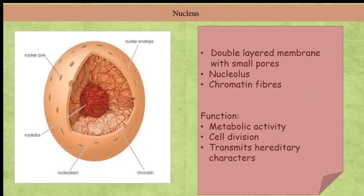Our first cell organelle is the nucleus. When the cell is observed under the electron microscope, we can see the nucleus covered by a double-layered membrane with small pores in it. These pores allow the passage of material in or out of the nucleus. The nucleus has one round nucleolus and a network of chromatin fibers. Chromatin fibers are thin, thread-like structures that form thick chromosomes. The nucleus controls all the metabolic activities of the cell and cell division, and is also involved in the transmission of hereditary characters from parents to offspring.